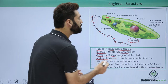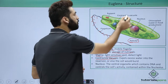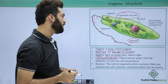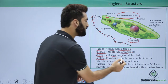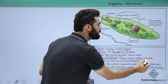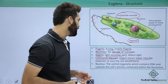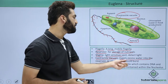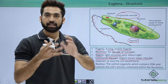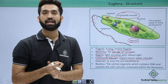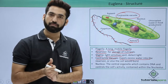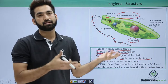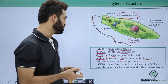They also have a contractile vacuole. If you can look, this is the contractile vacuole present in the body, which expels excess water into the reservoir — otherwise the cell will burst. So it is basically maintaining osmoregulation; it does the osmoregulation, otherwise the cell will burst.